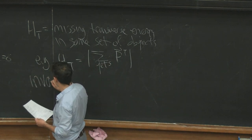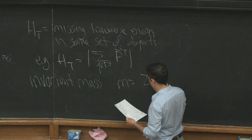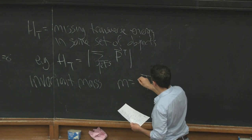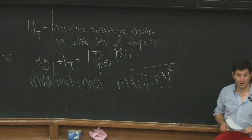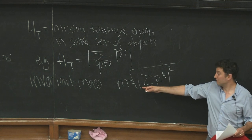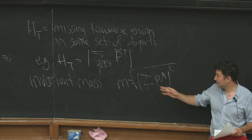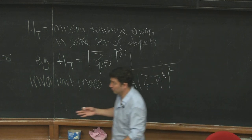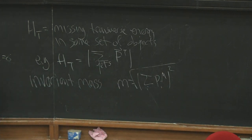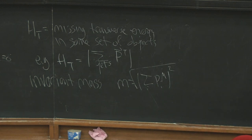Another useful object is the invariant mass, which is the square root of the sum over some objects i of p_i^mu, squared. The idea is: if you had a Z boson decaying to a muon and an anti-muon, you would sum over the muon and anti-muon and plot the distribution of that invariant mass — it should have a peak around the Z boson mass. This depends on being able to reconstruct the four-momentum of all the particles you're interested in, which generally you can't do exactly, but you approximate by assuming particles are massless and using their energy and angle to reconstruct the momentum. These are subtleties that are important to keep in mind when doing precision calculations.